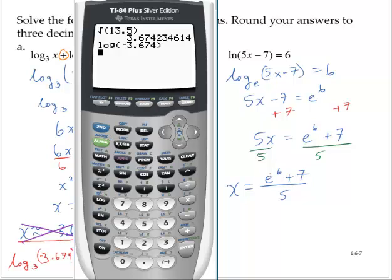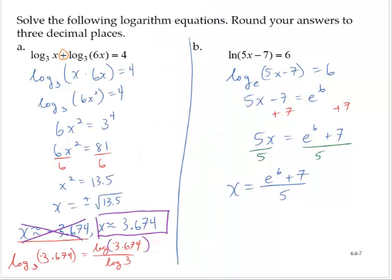So let me use the calculator to find that approximation. Since I have an operation in the numerator, I'm going to open a quantity. Let me just clear things out here. Open a quantity, bring up the exponential, e to the sixth, close off the sixth, add 7, close off the numerator, divide by 5. Hit enter, 82.086.